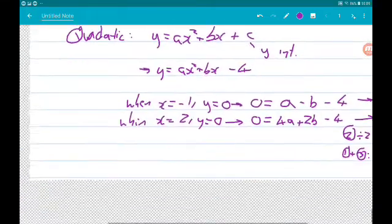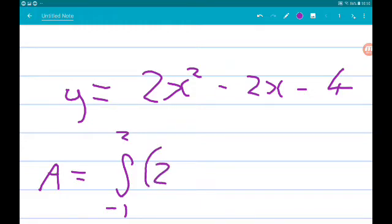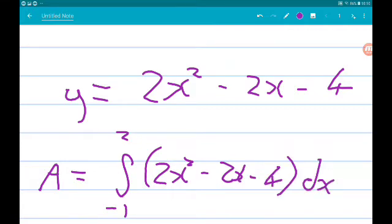So, A is the integral between minus 1 and 2 of 2x squared minus 2x minus 4 with respect to x.